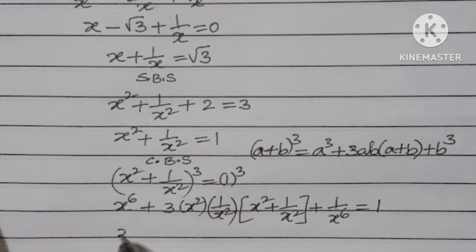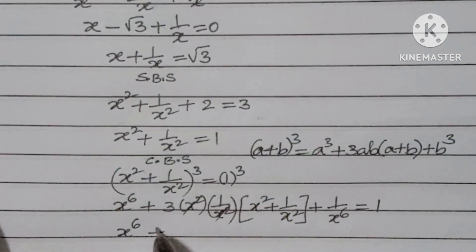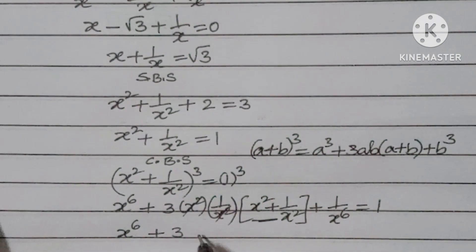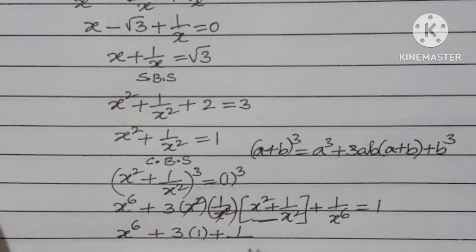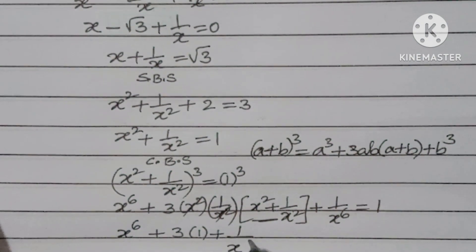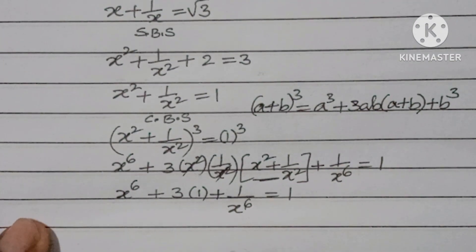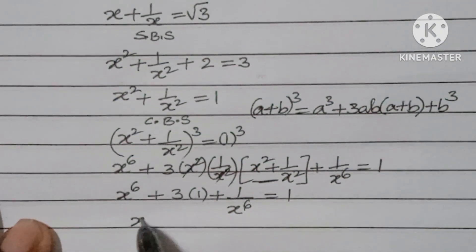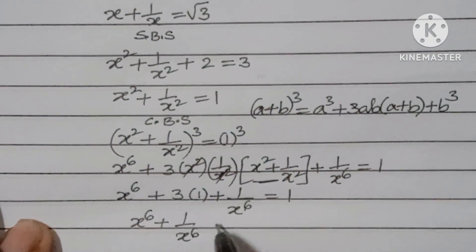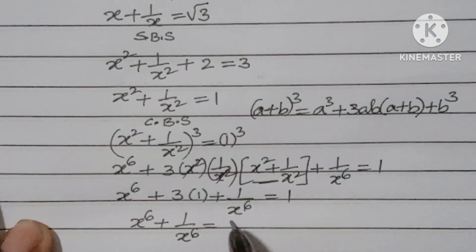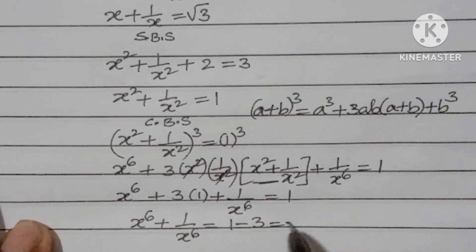Here the x² terms cancel, and we substitute x² + 1/x² = 1. So x⁶ + 3·1 + 1/x⁶ = 1, giving x⁶ + 1/x⁶ = 1 - 3 = -2.